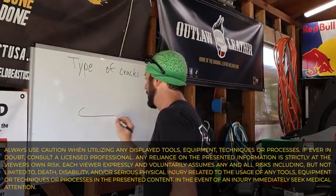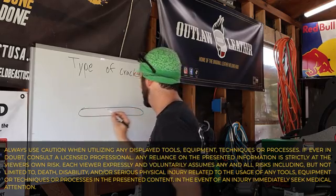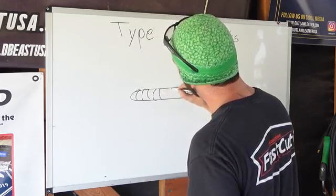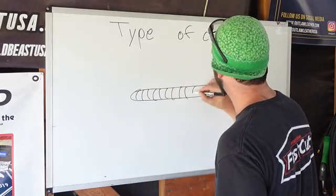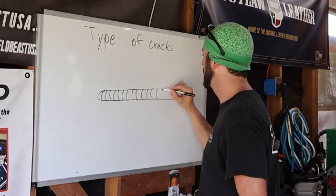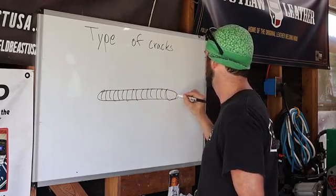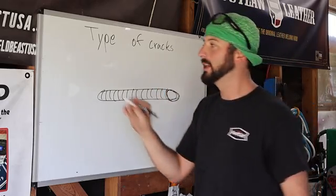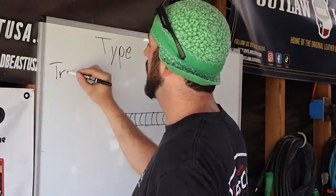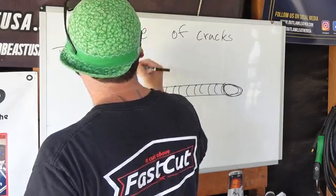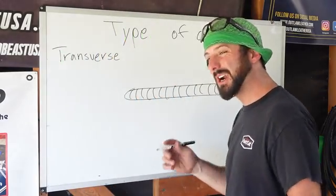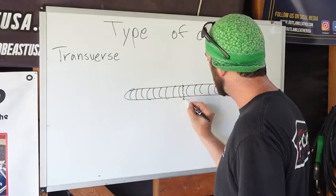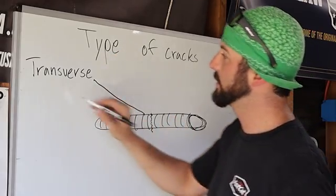Let's lay a little slug down real quick — this will be our weld bead. Here are the stacked ripples, the start, and a nice crater right here. So, types of cracks: a transverse crack is a crack that happens across the weld.